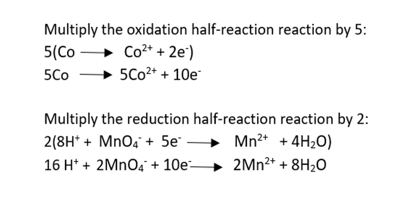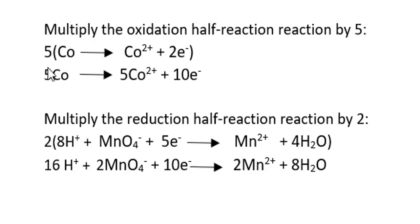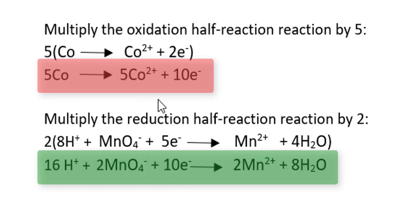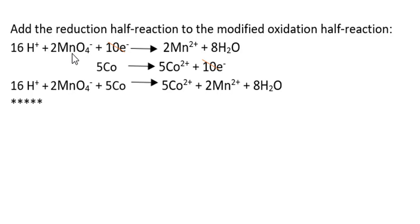Next, we ensure the same number of electrons in each half reaction. The reduction half reaction has five electrons and the oxidation has two. We multiply the oxidation half reaction by five to get ten electrons, and the reduction half reaction by two to also get ten electrons. We then add the two half reactions, canceling out the ten electrons on either side of the arrow. I encourage you to verify that there is both mass balance and charge balance in the final equation.